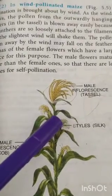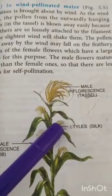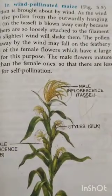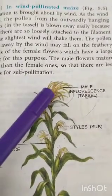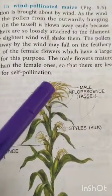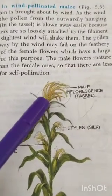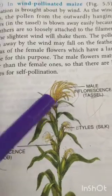There is no chance of self pollination in maize because both types of flowers mature at different times — a phenomenon known as dichogamy. The male flowers mature first, which is known as protandry.